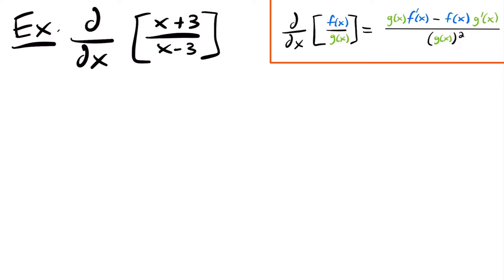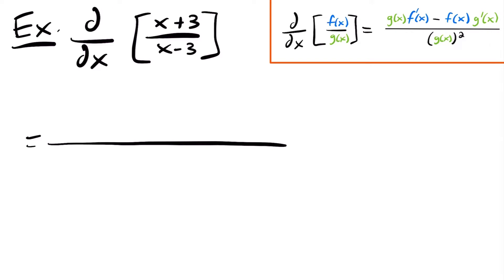You'll notice that we have our quotient rule right here to reference as we go through these problems. In this case our numerator function is x plus 3 and our denominator function is x minus 3. So x plus 3 would be our f of x and x minus 3 would be our g of x. So just keep that in mind as we go about this derivative. This will be equal to our denominator function x minus 3 times the derivative of the numerator or the top.